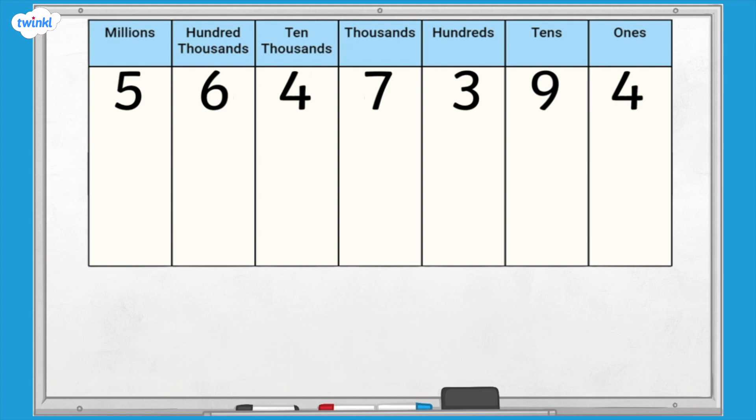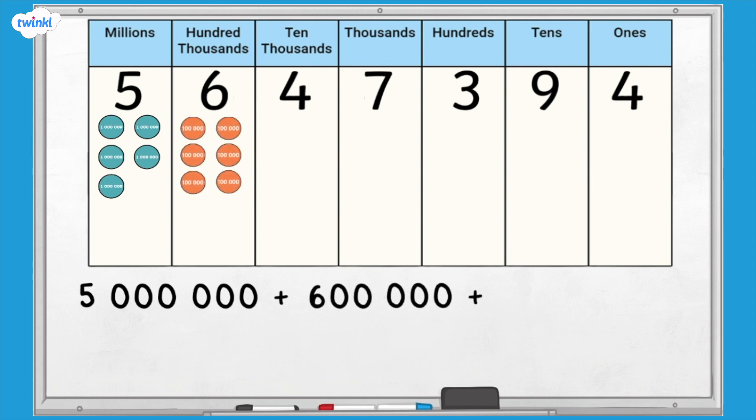In the millions column, we have 5. 5 millions is 5 million, so this digit has a value of 5 million. In the hundred thousands column, we have 6. Six hundred thousands is 600,000, so this digit has a value of 600,000. In the ten thousands column, we have 4. 4 ten thousands is 40,000, so this digit has a value of 40,000.